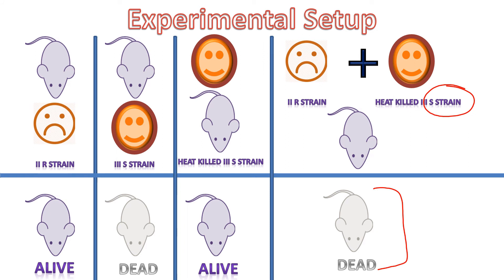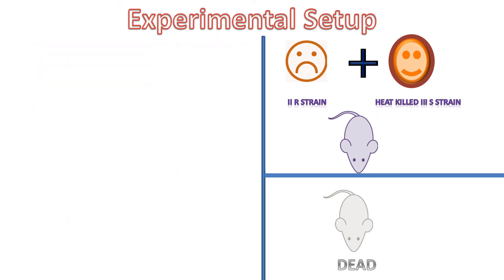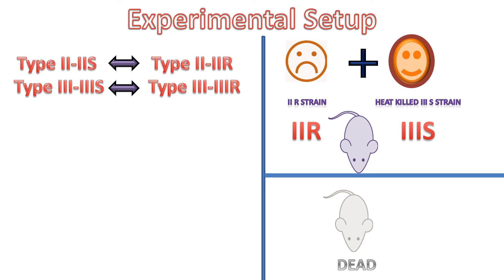This was surprising because only a heat-killed 3S strain had been injected, yet living 3S strain was found in the dead mice. The living 3S strain could not have arisen from a mutation of the 2R strain, because a mutation of the 2R strain would have produced a 2S type, not a 3S type. Thus, the possibility of mutation was ruled out.